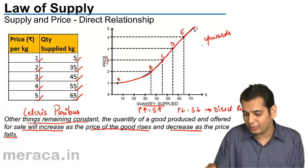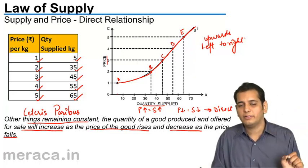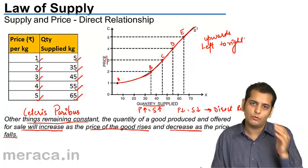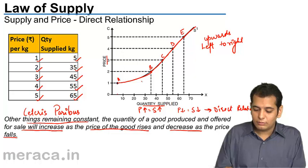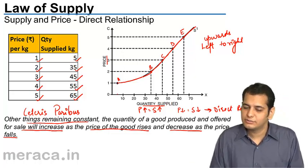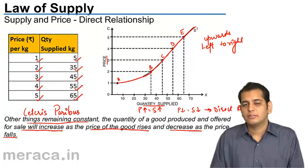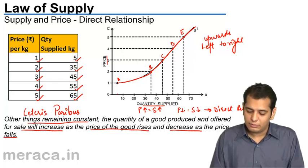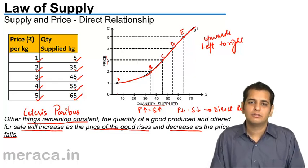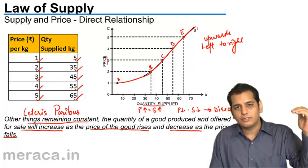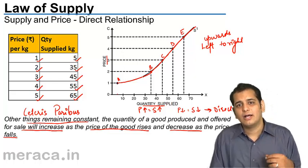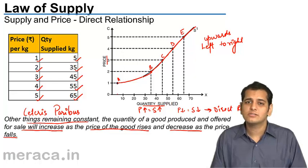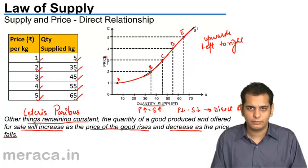The supply curve slopes upwards from left to right. In demand, we studied the demand curve, which is always downward sloping — it has a negative slope. Whereas the supply curve has a positive slope.